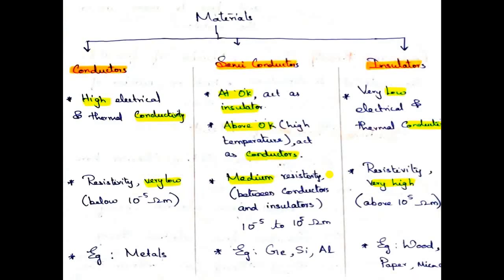Generally, materials are classified into 3 major types: Conductors, Insulators, and Semiconductors. In our semester portions, we will cover all 3 topics chapter wise. First, Conductors.